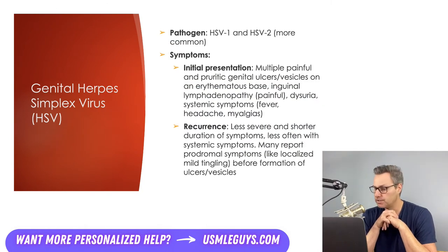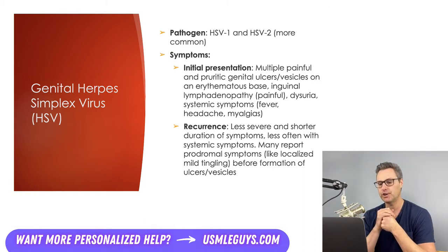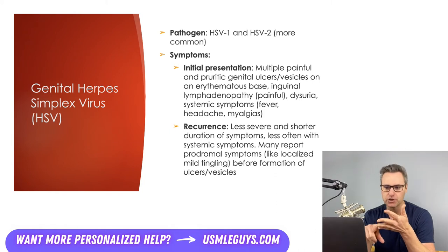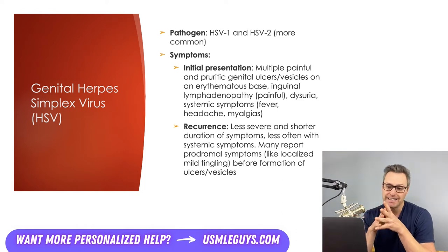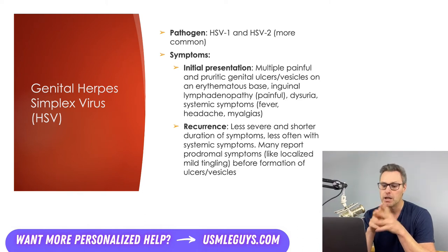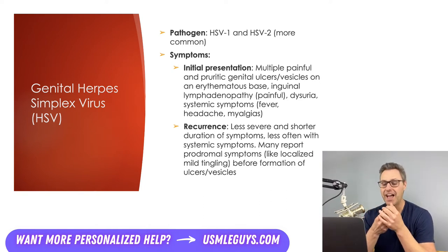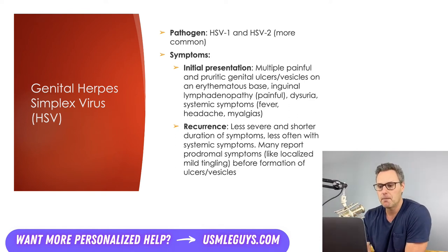Next up, we have genital herpes, caused by herpes simplex virus 1 or 2, with HSV-2 being more common. The initial presentation is multiple painful and pruritic genital ulcers or vesicles on an erythematous base, painful inguinal lymphadenopathy, dysuria, and systemic symptoms like fever, headache, and/or myalgias. Recurrence typically occurs with less severe and shorter-duration symptoms and less often with systemic symptoms. Many patients report a prodromal symptom of localized mild tingling before the formation of new ulcers and vesicles — if you hear that, think genital herpes.